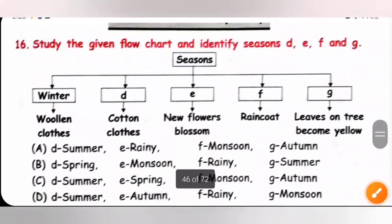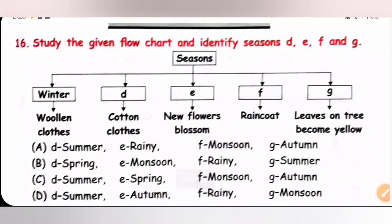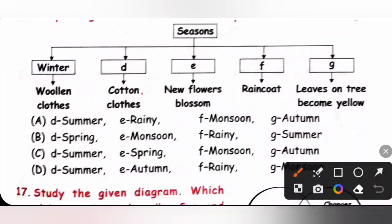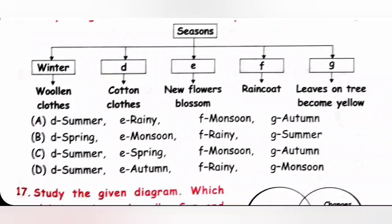Achieve section. Question 16: Study the given flow chart and identify the seasons D, E, F, and G. We wear cotton clothes in summer, so D is summer. New flowers blossom in spring, so E is spring. We wear a raincoat during the rainy or monsoon season, so F is monsoon. Leaves on trees become yellow during autumn, so G is autumn. Option C is the correct answer.